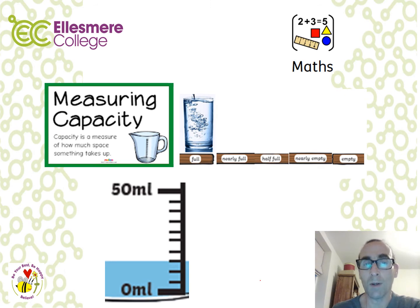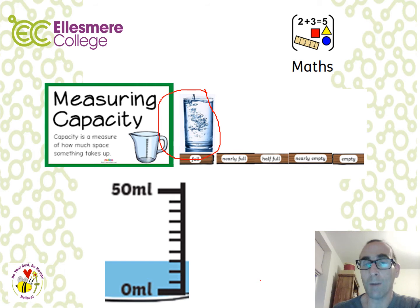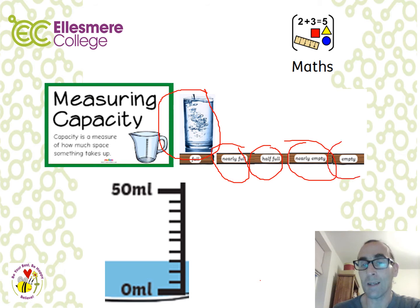In lesson one we're going to be looking at measuring capacity. Capacity is a measure of how much space something takes up. Initially we'll be looking at some describing aspects — in this context the glass is full. There'll be some other experiments where we start to use other terms such as nearly full, half full, nearly empty and empty.